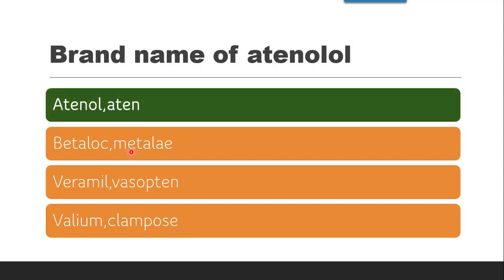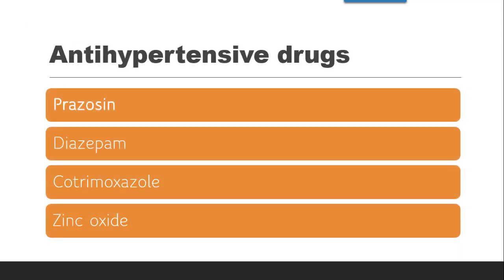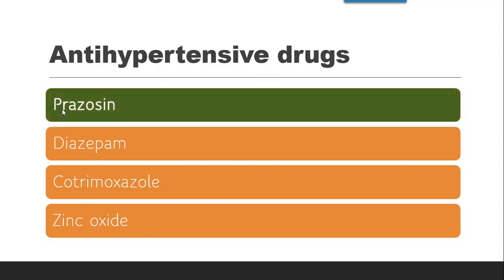The next question is: which of the given is an antihypertensive drug — diazepam, cotrimoxazole, zinc oxide, or prazosin? Diazepam, cotrimoxazole, and zinc oxide are not antihypertensive drugs. The correct answer is prazosin.